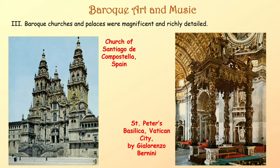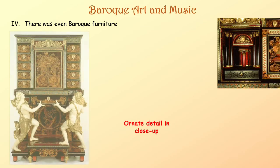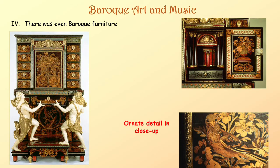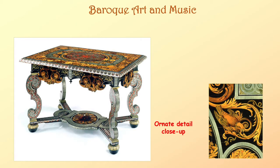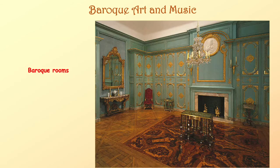Baroque churches and palaces were magnificent and richly detailed — the idea was going over the top, over-decorating, not pulling any punches. There was even Baroque furniture, like an ornate Baroque table with extravagant carved detail. There were even Baroque rooms where an entire room was decorated in over-the-top fancy style.